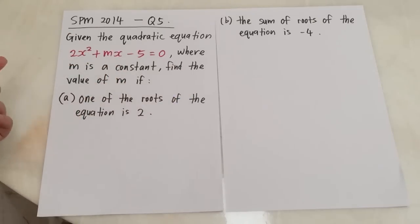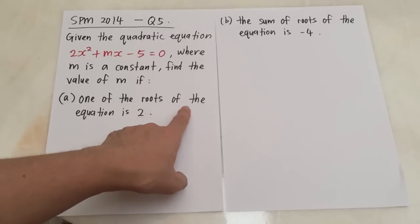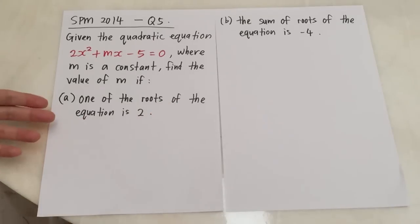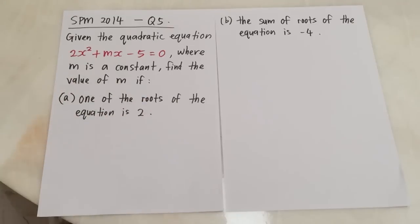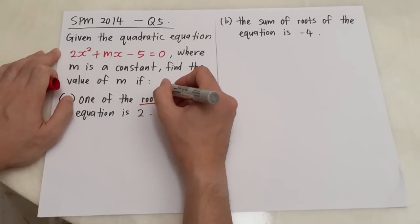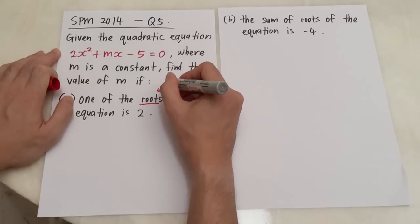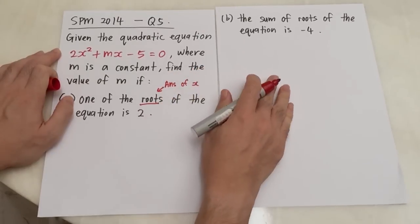In this question, I think it's a quadratic question because in the first sentence, it actually mentioned given that the quadratic equation 2x squared plus mx minus 5 equals 0 where m is a constant. Constant just means m is a number.